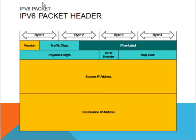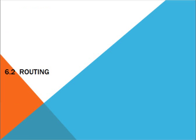Looking at the IPv6 header in detail, it consists of the following fields: the version number, the traffic class, payload length, and so on.